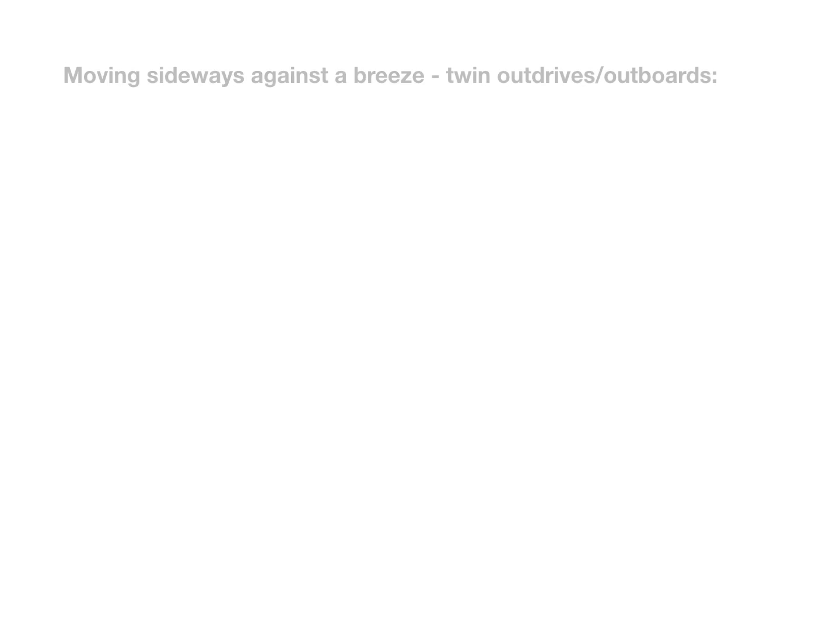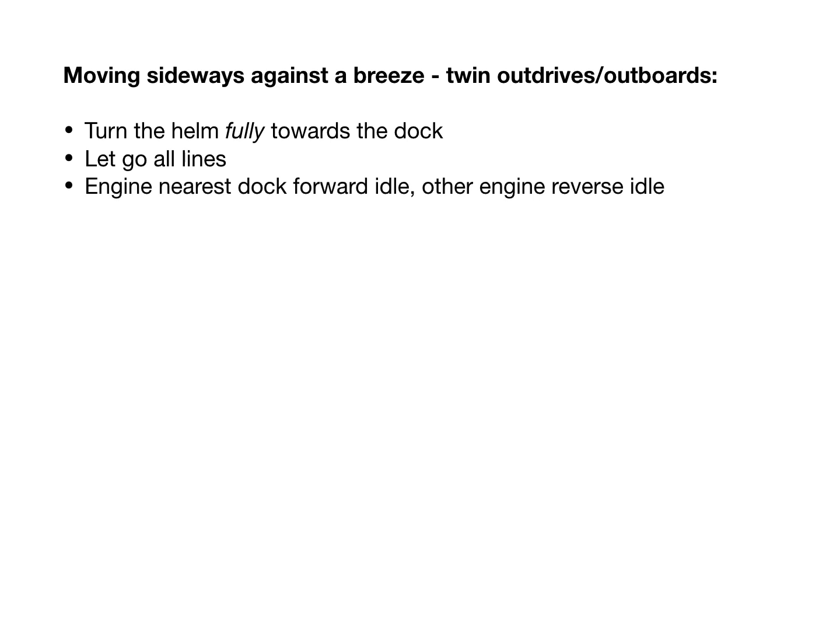Quick summary then. To move sideways against a breeze in a twin with outdrives or outboards: turn the helm fully towards the dock, let go all lines, put the engine nearest the dock into forward idle and the other engine in reverse idle. Increase power on the engine in forward to stop the boat turning.